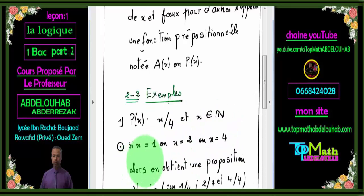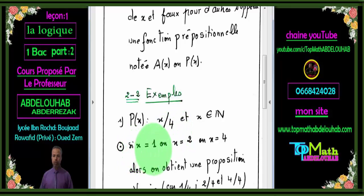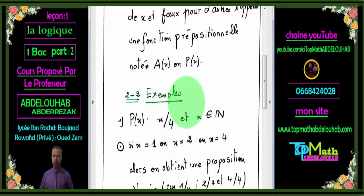Je vais citer quelques exemples. Si je remplace la variable x par 1, ou par x=2, ou par x=4, on constate que 1, 2 et 4 sont des diviseurs de 4. Donc si on remplace x par 1, ou par 2, ou par 4, on trouve un énoncé mathématique dont le sens est vrai. Autrement dit, on obtient une proposition vraie dans ces trois cas.